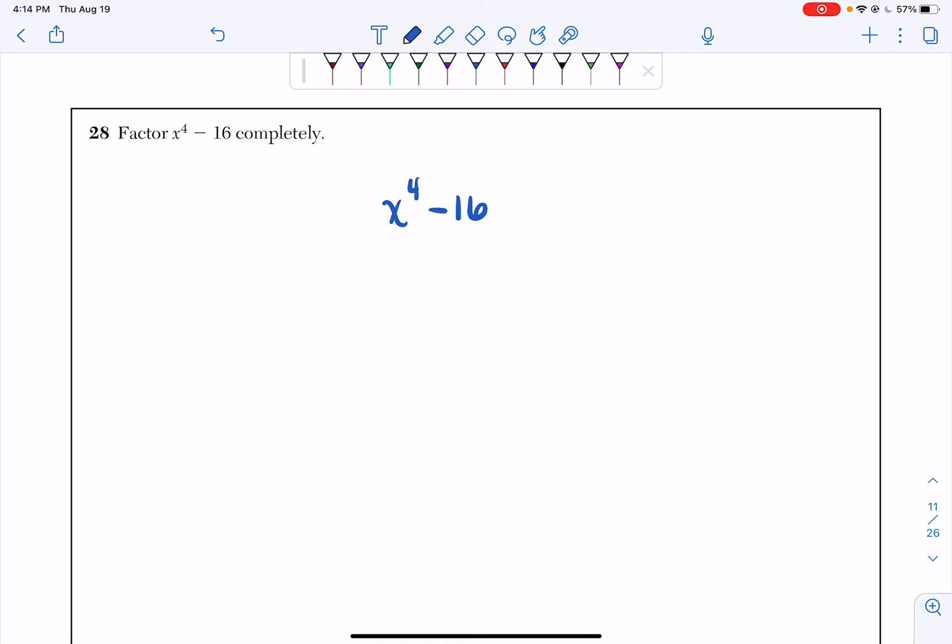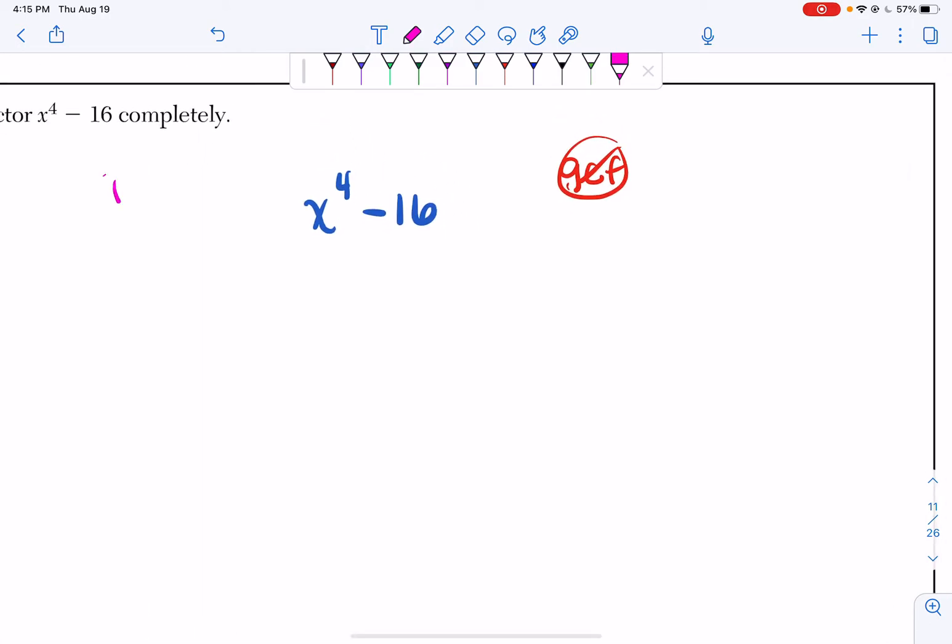We have to ask ourselves how many terms do we have? If we look, we have two terms, an x to the fourth and a 16. They are separated by a subtraction. There is no GCF. So this is a good sign that we're going to use difference of two squares factoring.